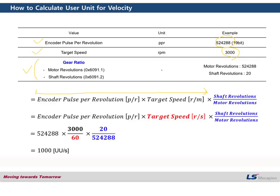Let's input these values into the formula. Encoder pulses per revolution should be 52488. And 3000, with unit conversion from minute to second, we divide by 60. And 20, which is shaft revolutions, and 52488, which is motor revolutions. By this process, we can get 10,000 user units per second.